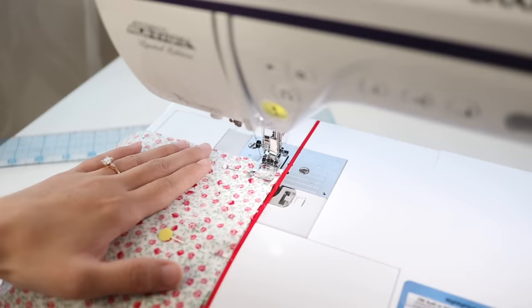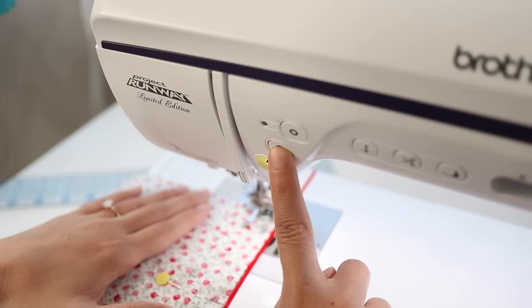To backstitch, I first sew a couple stitches forward by stepping on my foot pedal and then I hold onto my backstitch button to sew a few stitches back. And that's it. Now you can continue sewing the rest of your seam forward.